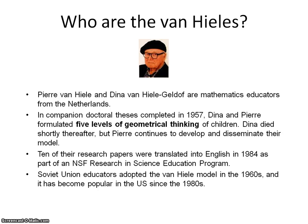Pierre and Dina Van Hiele are mathematics educators from the Netherlands. In 1957, they both wrote doctoral theses on five levels of geometric thinking of children. Dina died shortly thereafter, but Pierre continued to develop and disseminate their geometrical model. Ten of their papers were translated into English in 1984 as part of an NSF program.